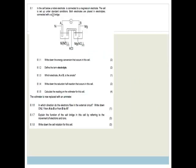In a cell below, the nickel electrode is connected to a magnesium electrode. The cell is set up under standard conditions. Both electrodes are placed in electrolytes connected with a salt bridge. Write down the energy conversion that occurs in the cell. Well, the trick here is to realize that you've got two different cells and there's a voltmeter between them. Therefore, we can say it's definitely going to be chemical energy to electrical energy.